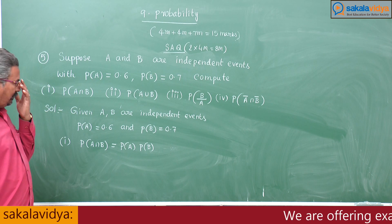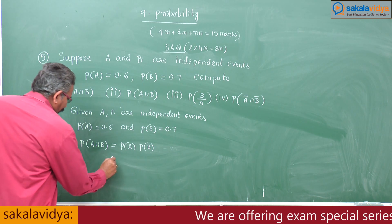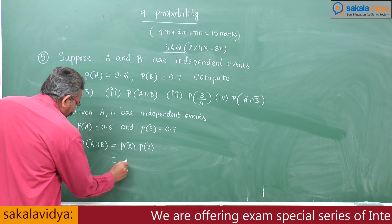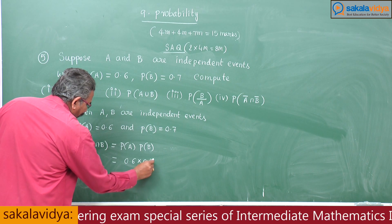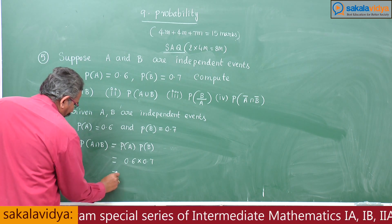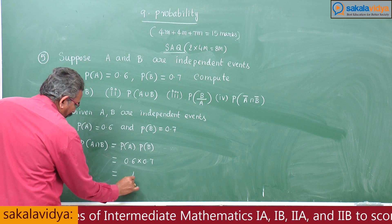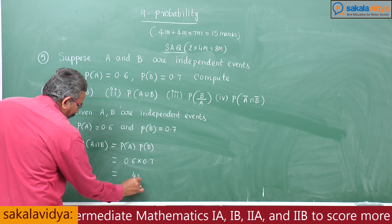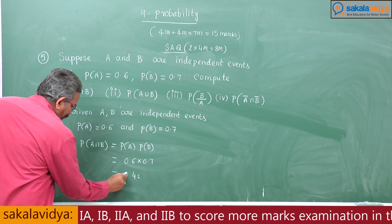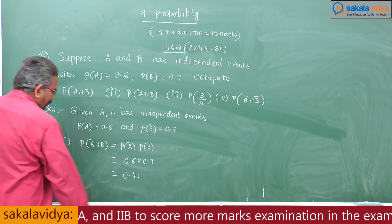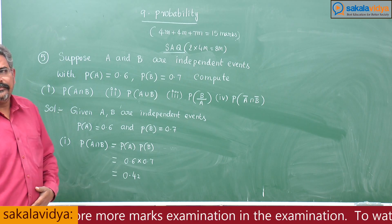So this is 0.6 into 0.7. First, 7 into 6 — writing them to two decimal points — gives 0.42. So the first problem answer is 0.42.